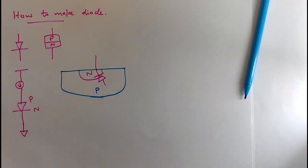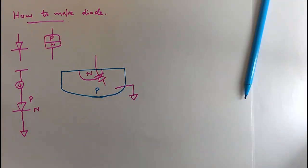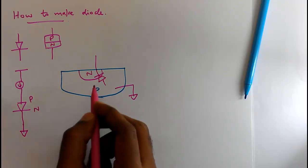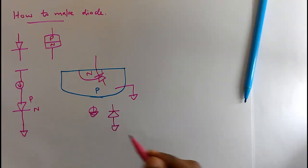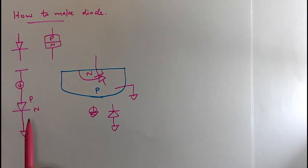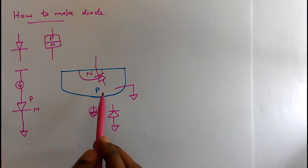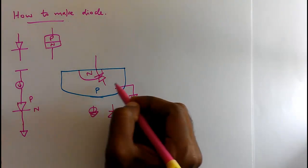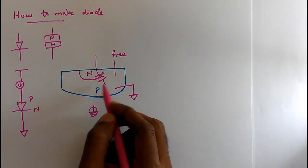What is the problem with this implementation? The issue is the P substrate is always connected to ground in the CMOS process. So the diode formed here will have the P substrate connected to ground. But this is not what we want — we need the N part to be grounded and we should be able to connect the P terminal, that is the anode, to the current source. We cannot do that because the P substrate is always grounded, so this P is not free to connect somewhere. This implementation is not possible for us.